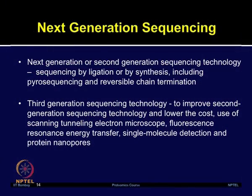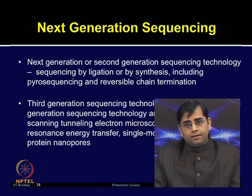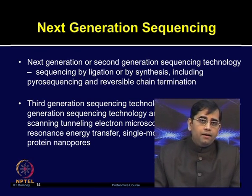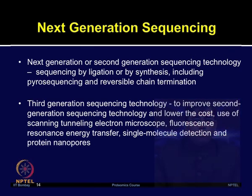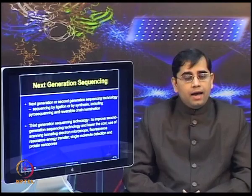Traditional sequencing methods, including Sanger's chain termination method as well as the chemical method of Maxam and Gilbert in 1976, can be termed first generation sequencing methods. Next generation or second generation sequencing technology includes sequencing by ligation or by synthesis, including pyrosequencing and reversible chain termination. Even more advanced, third generation sequencing technology is in progress, aiming to further improve second generation methods and lower the cost per base by using scanning tunnel electron microscopy, fluorescence resonance energy transfer, single molecule detection, and protein nanopores.